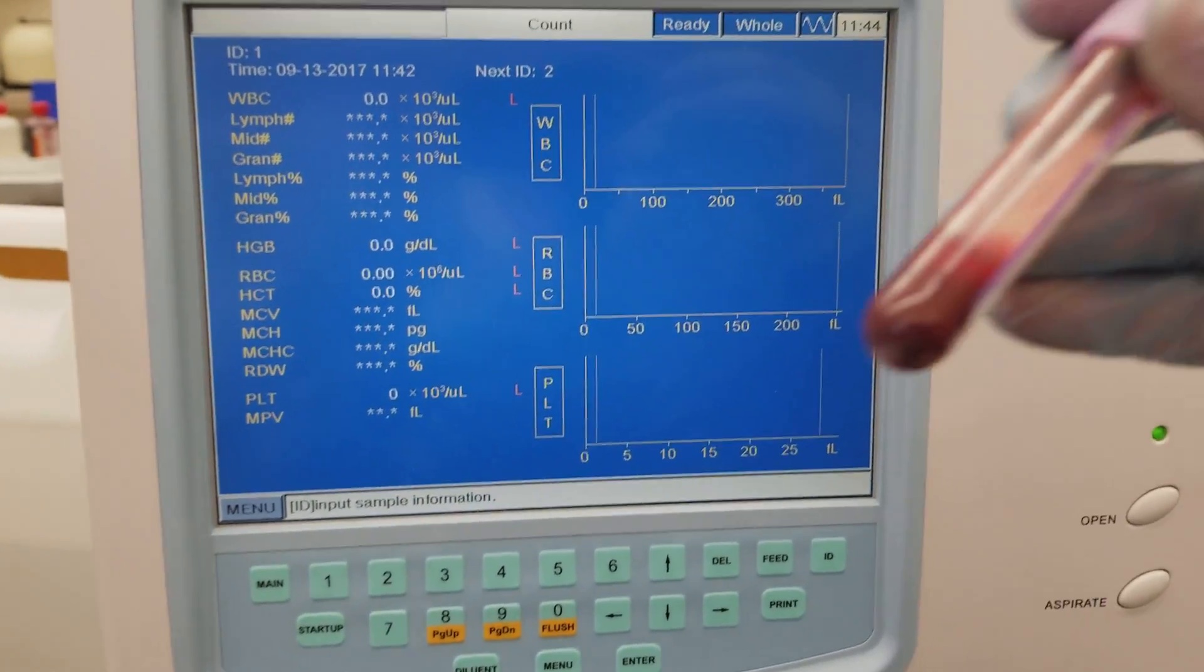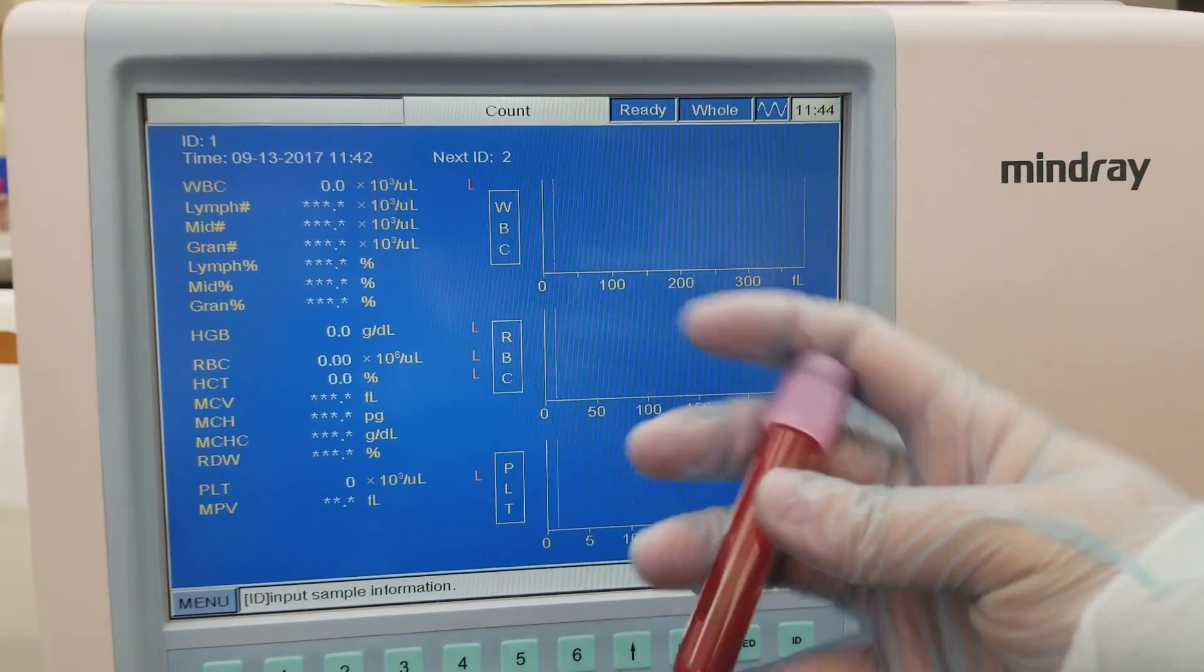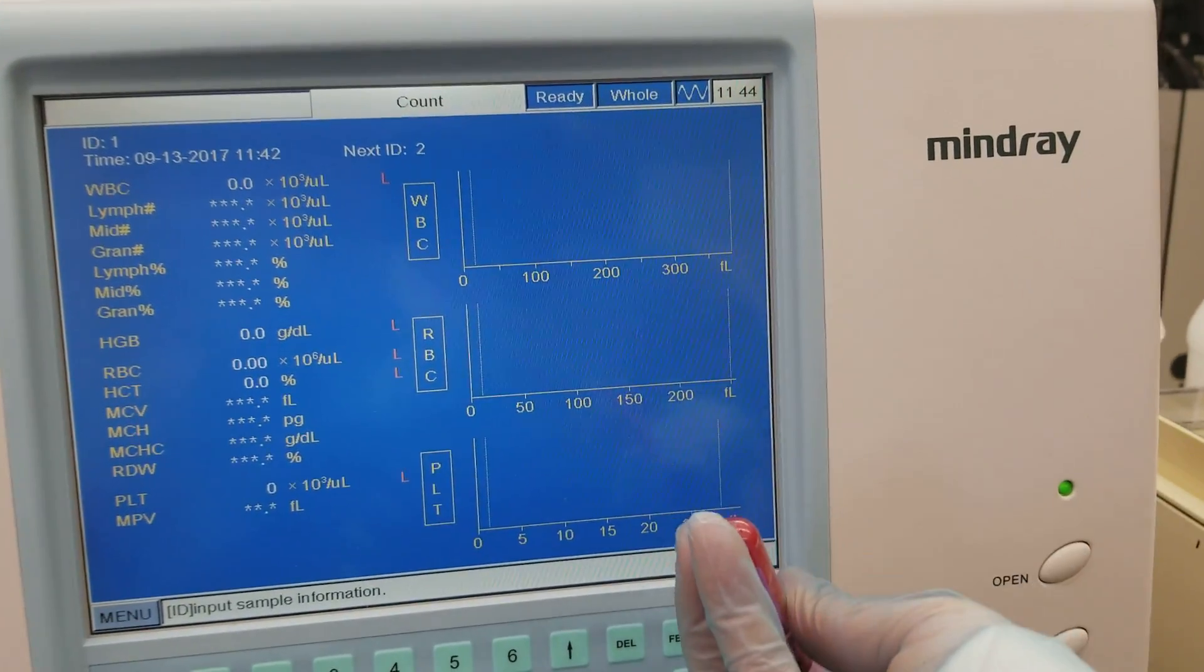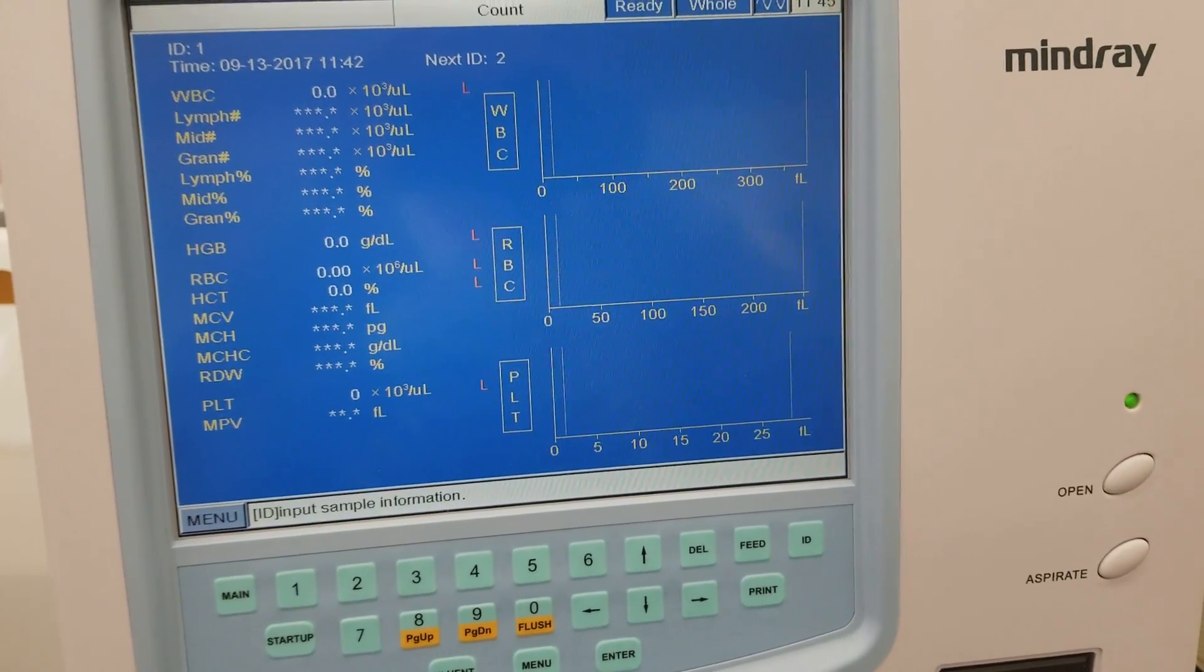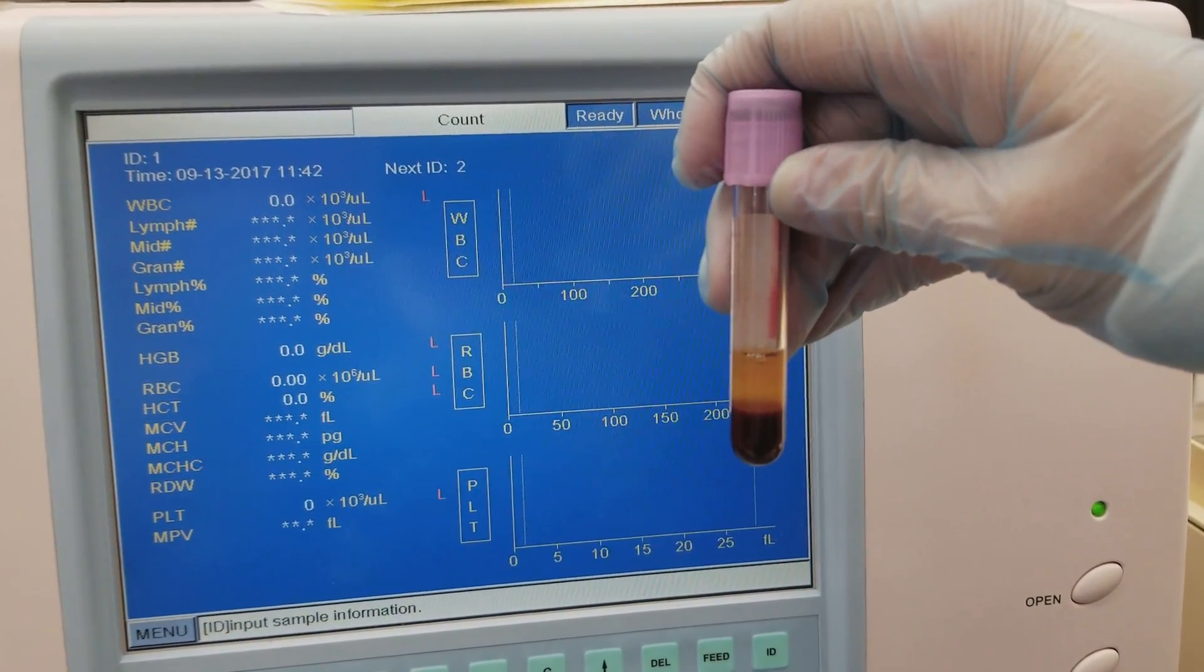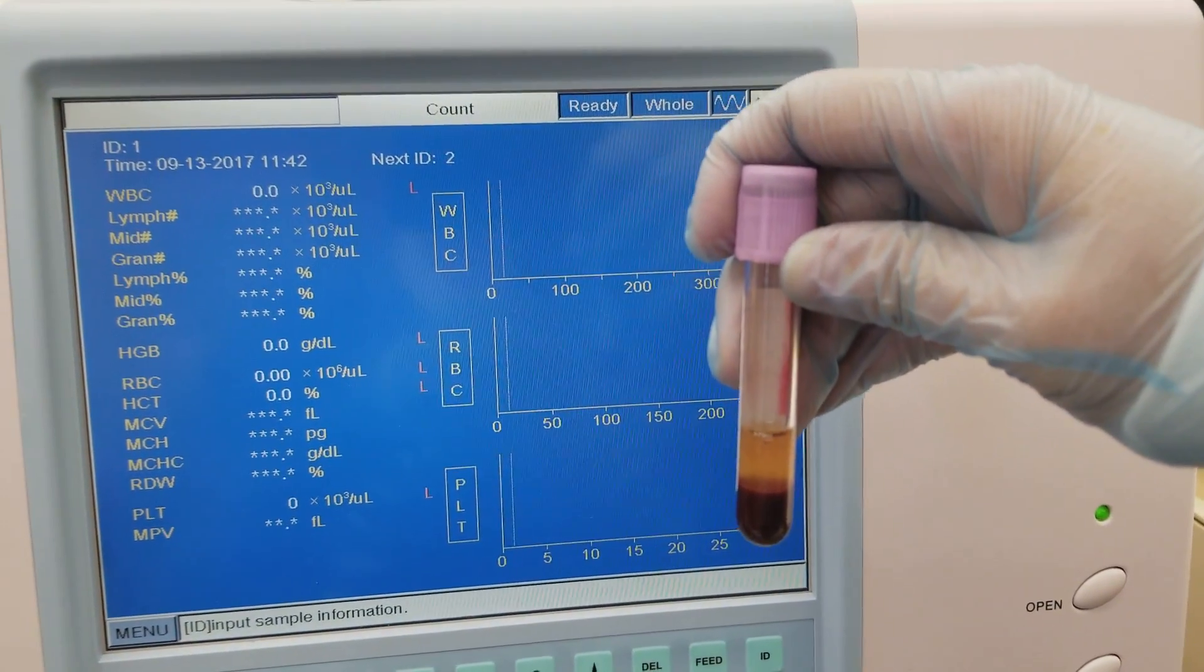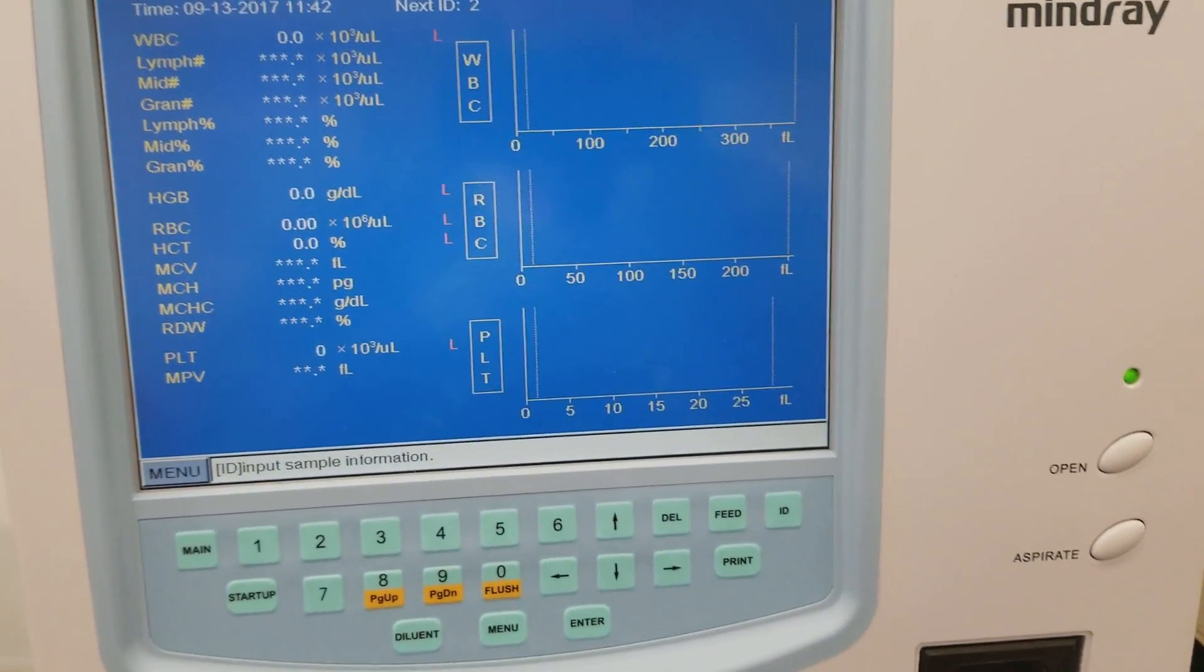I have a patient sample here. We run lavender top tubes on this analyzer, which is an EDTA whole blood sample. You want to make sure you rock gently, not vigorously, because you could cause hemolysis. If you have a specimen that has been sitting, it would separate and you would have the plasma on top and the cells on the bottom. I know that's plasma on top because this has the anticoagulant EDTA in it, which means it should not have clotted. Therefore, we know that would be plasma as the liquid portion of the blood.